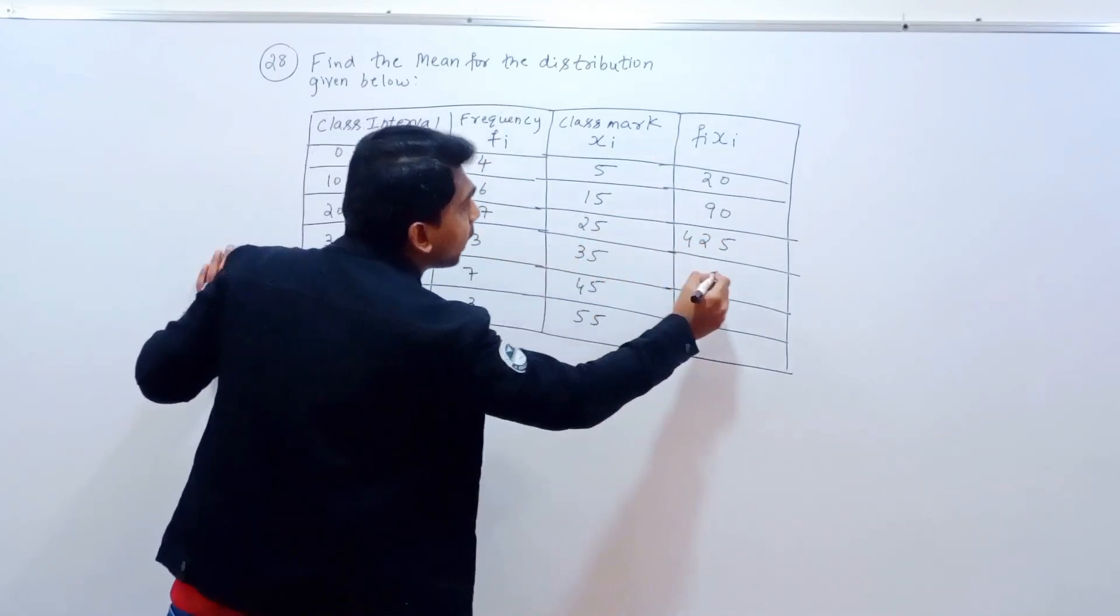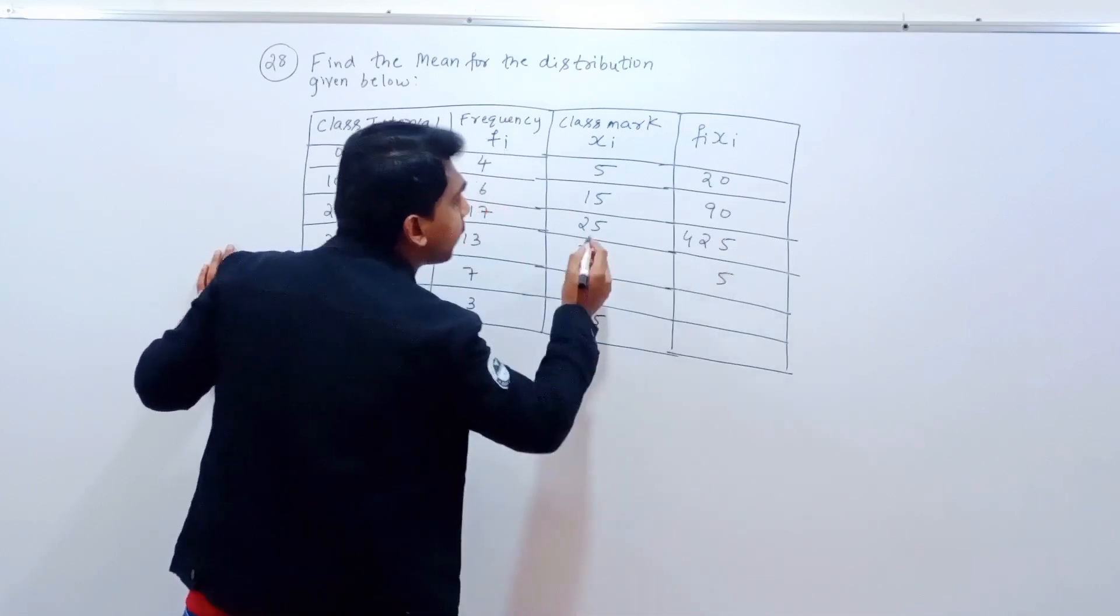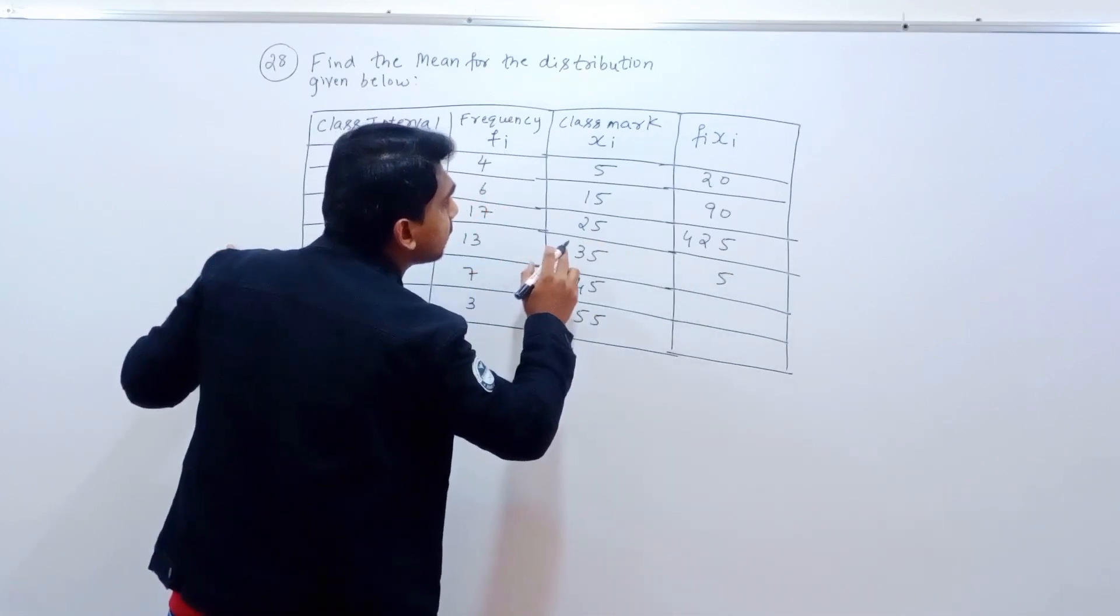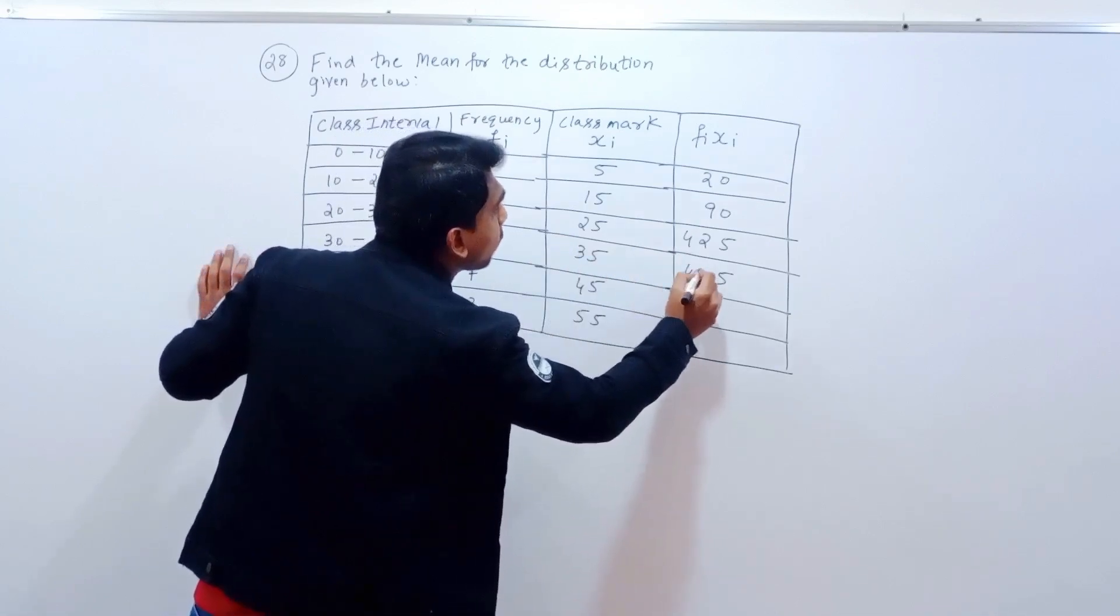13 times 35: 35, 35, 65, 6 carry. 13 times 3 is 39, 39 plus 6 is 45, so 455.